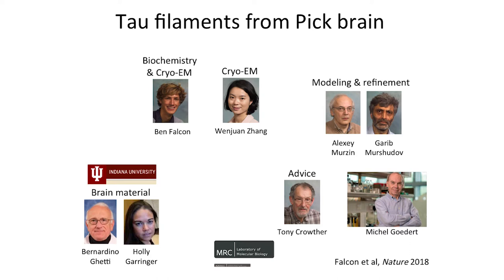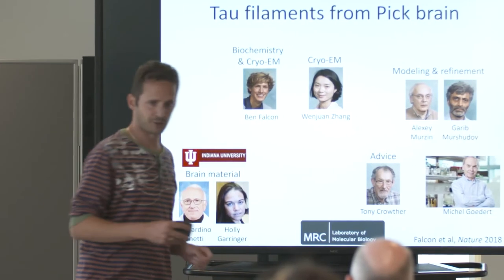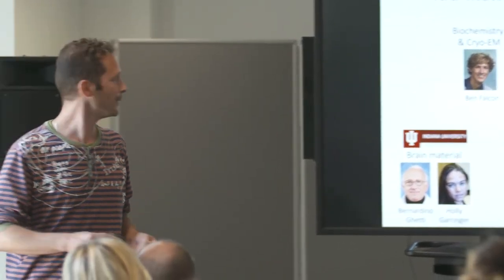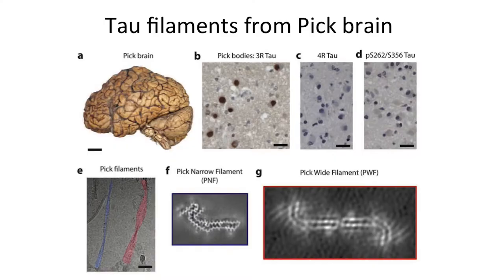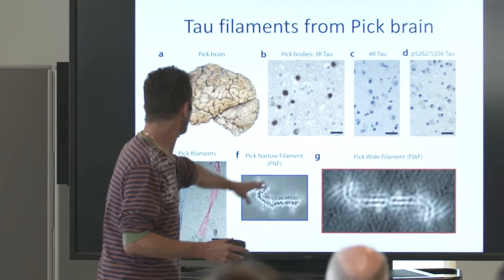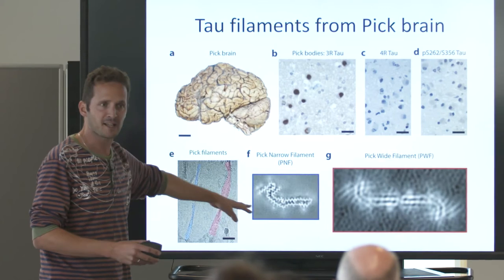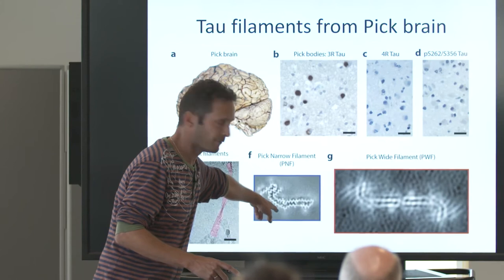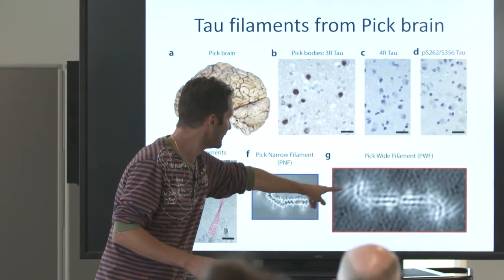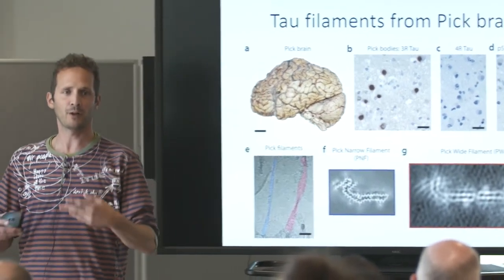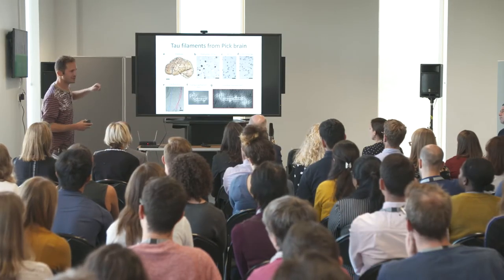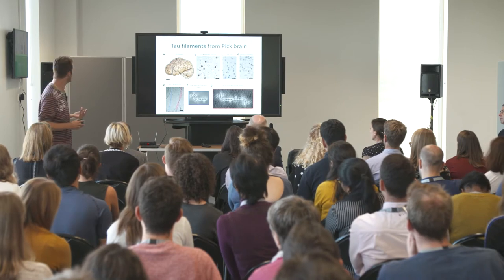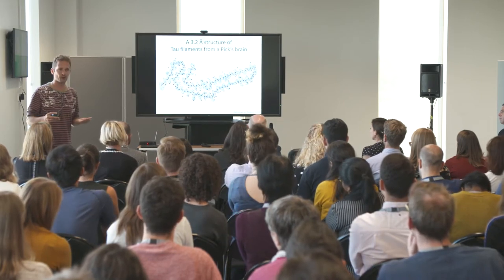For Pick's disease, this work was taken up by Ben Falcon, a postdoc in Michel's lab, with help from a postdoc in my lab called Wenjuan. We used a Pick's disease brain, which has spherical Pick bodies made of tau aggregates. We could see narrow and wide filaments, and the XY cross-sections perpendicular to the helical axis showed very high resolution for the narrow one. The wide filament appeared to be a head-to-head packing of the narrow one; the narrow one was good enough to build an atomic model.